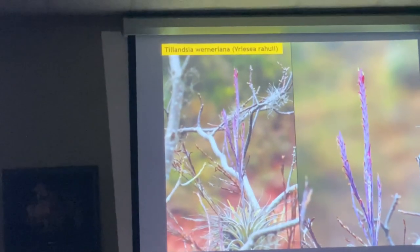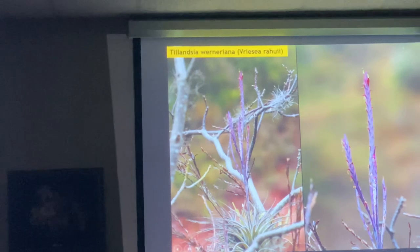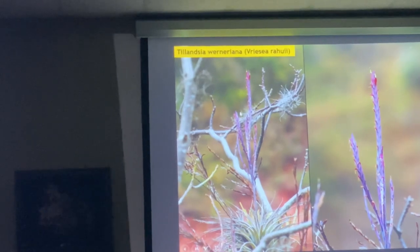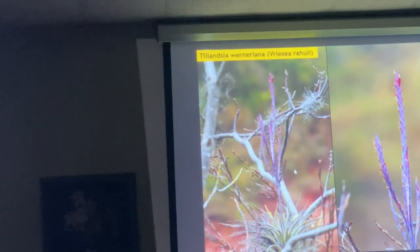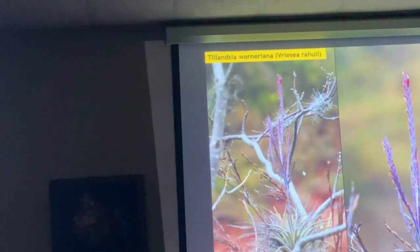There you have Tillandsia grazielae, which used to be called Vriesea rauhii. It's this plant here. I think I do have a better picture of it — a beautiful plant. I'm not sure if this one is in cultivation.